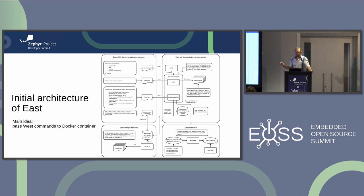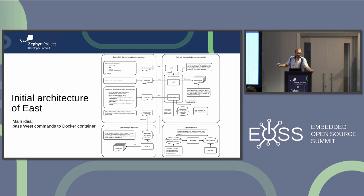Docker seemed like a hard path but the right way to go. This was the initial architecture of EAST and all the building blocks you would need to run it. Keep in mind the smaller block on the right side is what the user has to interact with — everything else is infrastructure. The main idea was just to pass West commands to the Docker container. So if you call 'east build', that gets turned into 'west build' and is just passed along to the Docker container to do its thing.